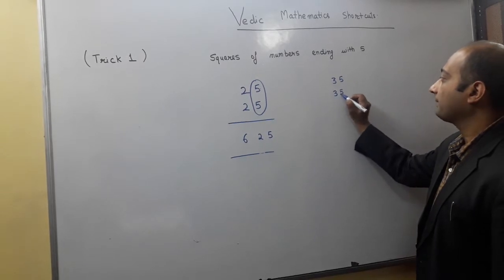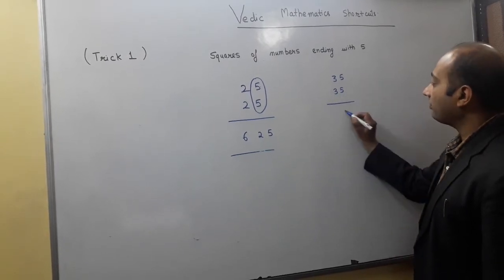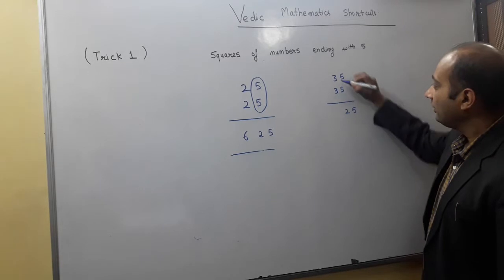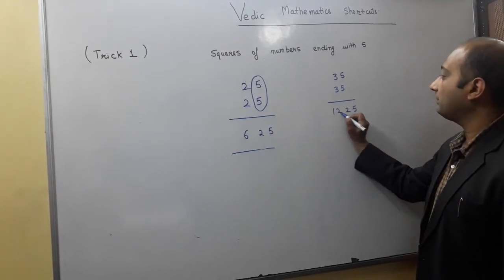For example, we have 35 square. If we want to take 35 square, then multiply 5 and 5. And 3 to next natural number, which is 4, multiply. So the answer is 1225.